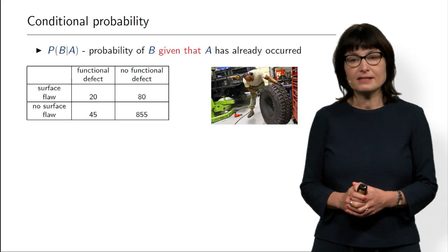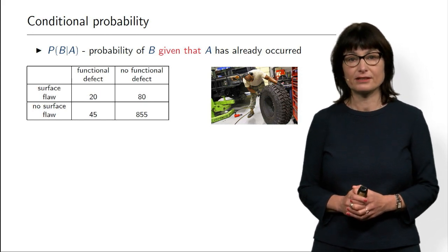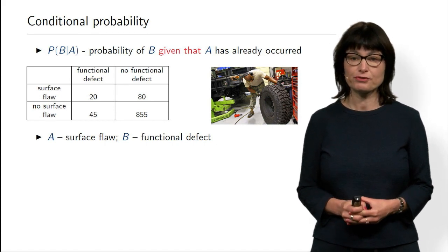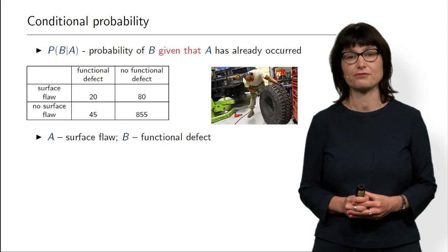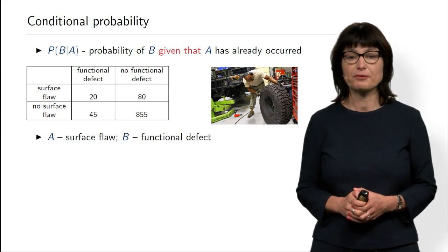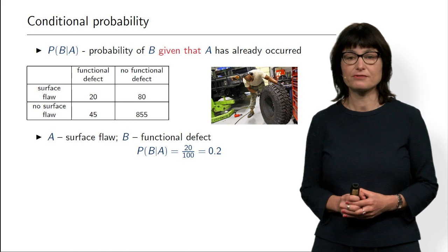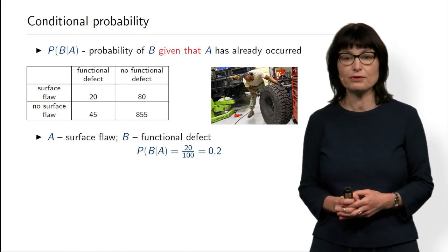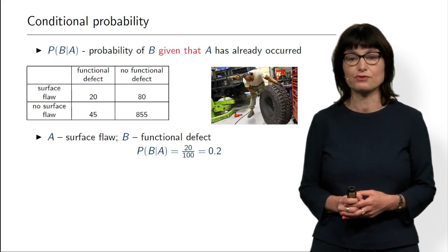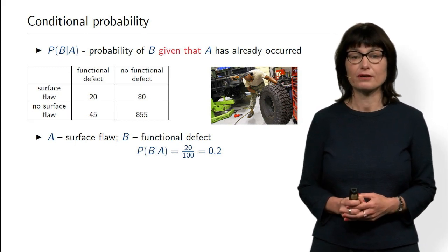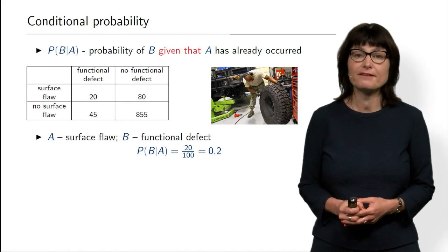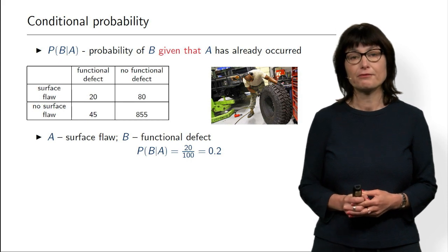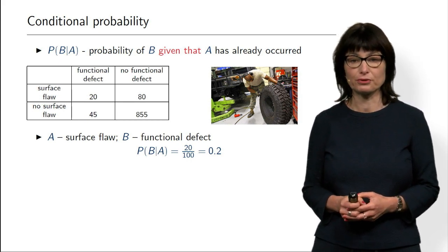Now let us consider two events related to this small experiment. Event A will mean a surface flaw and event B will mean a functional defect. So what is the probability of B given A? Given the surface flaw, there are 100 tires with surface flaw and 20 of them also have a functional defect. So given there is a surface flaw, the probability of a functional defect B will be 20 divided by 100, which is 0.2.